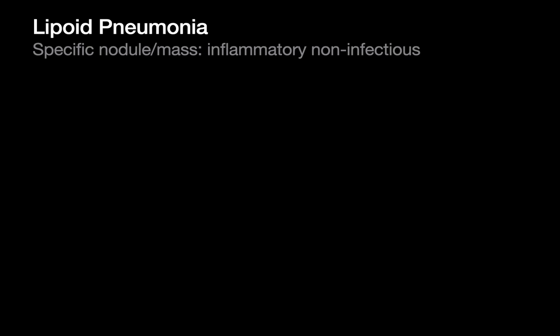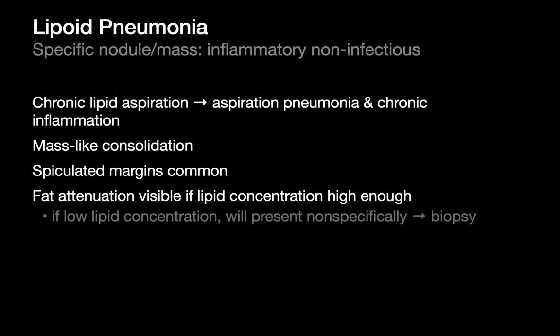The last entity we have to know about that can present specifically as a mass in the lung is lipoid pneumonia — a diagnosis I don't think I'd heard of until I became a radiology resident. Lipoid pneumonia is basically a foreign body reaction to lipid within the lung parenchyma. Classically, people talk about lipid aspiration — exogenous introduction of lipid into the lung resulting in a foreign body reaction and chronic inflammation, which can sometimes be quite aggressive, resulting in a weird-looking mass in the lung, often with some ugly spiculated margins.